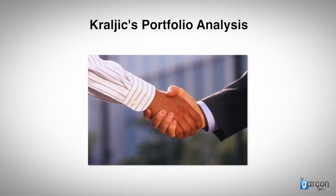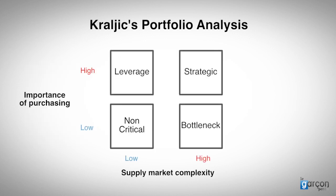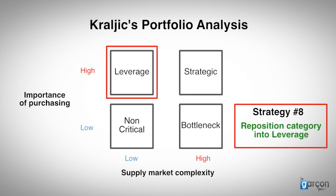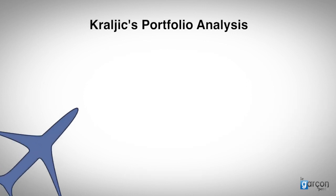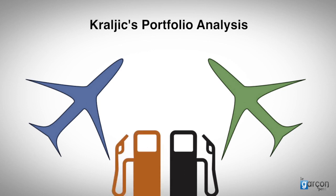Longer-term relationships and cooperative behaviours are designed to reduce the buyer's risk and align the two organisations' goals. This may not work, as typically the supplier may have more scale than the buyer. If the cooperative approach does not work, then strategy 8 involves reducing dependence on the supplier and repositioning the category into the leverage quadrant. Strategies to do this might include sponsoring a new entrant into the market, or changing the specification to open up competition to other suppliers. I recall two airlines faced with a monopoly aviation fuel supplier at one airfield. Both airlines decided to invite another supplier to enter the market in return for a guaranteed share of their total business for a number of years.